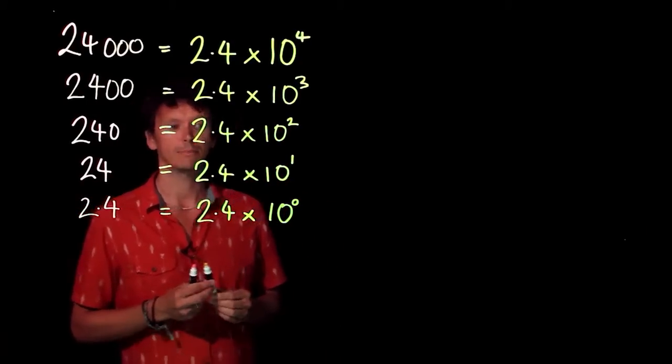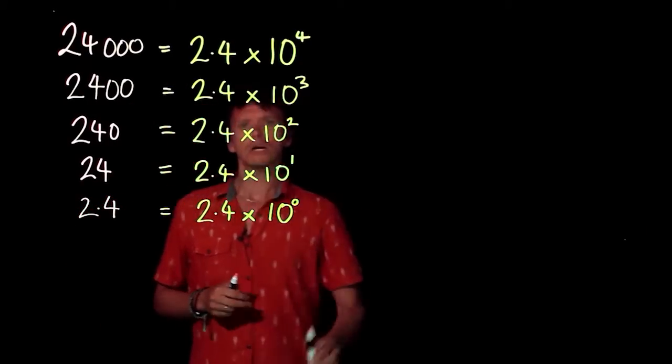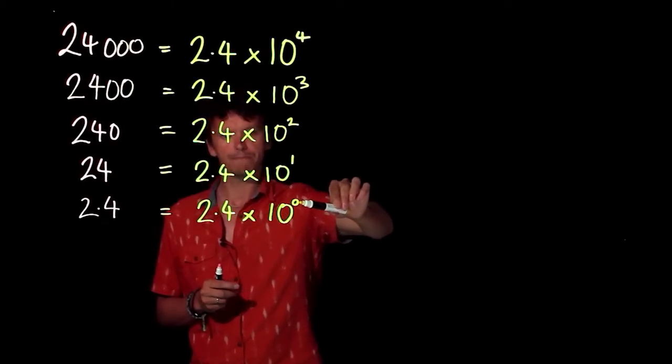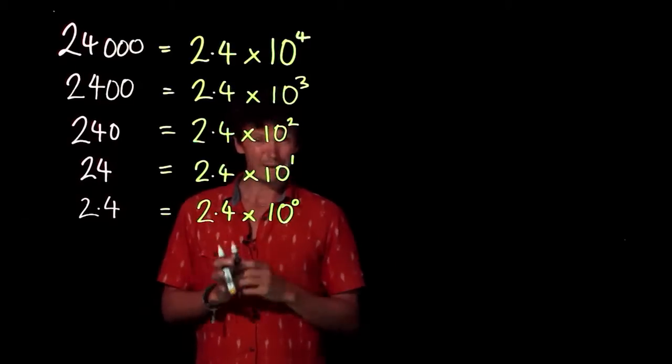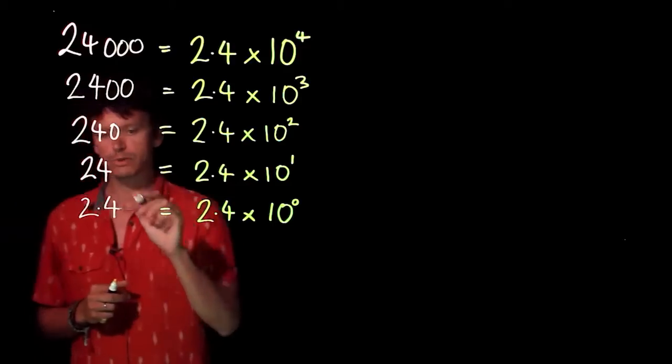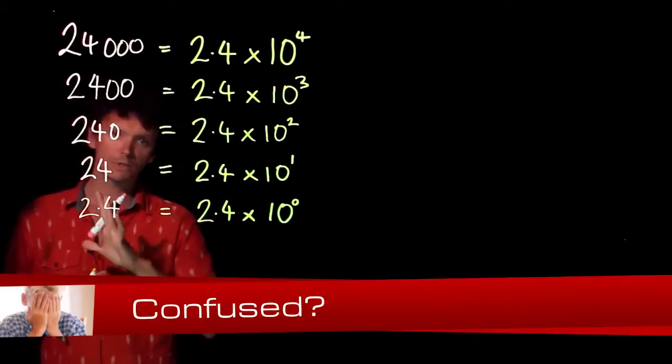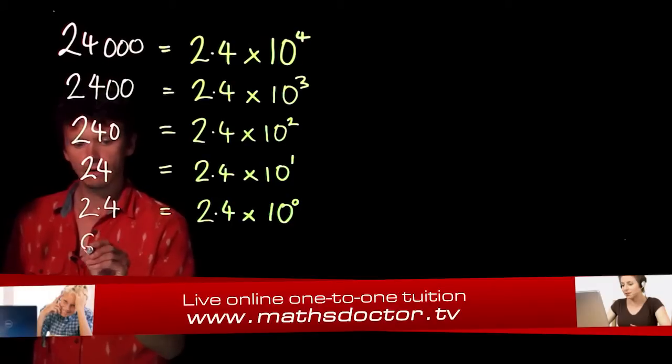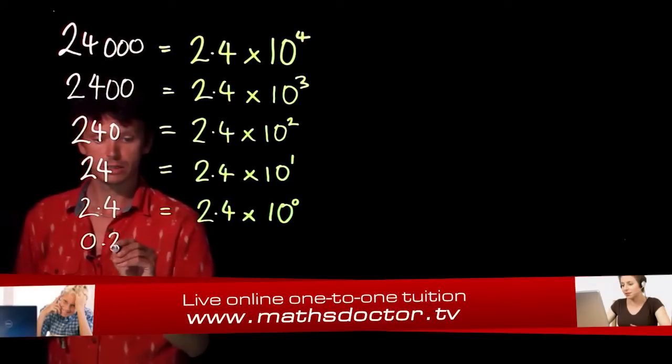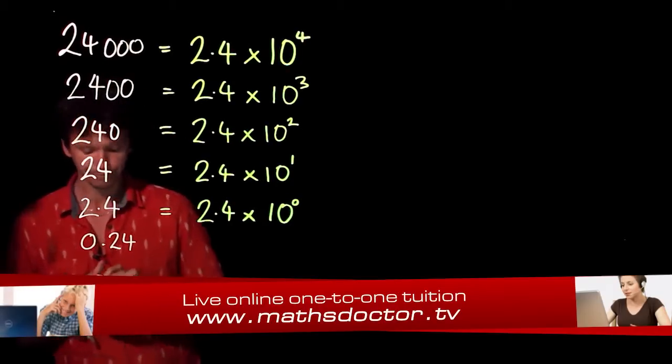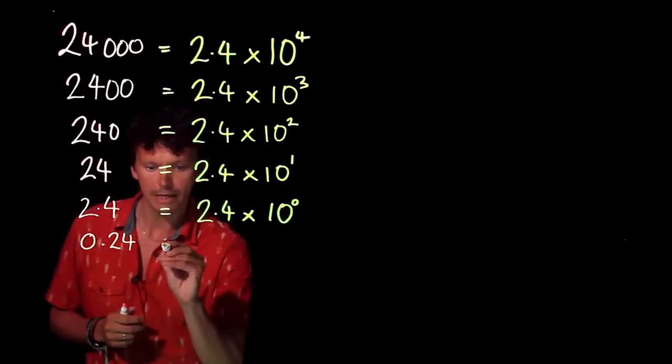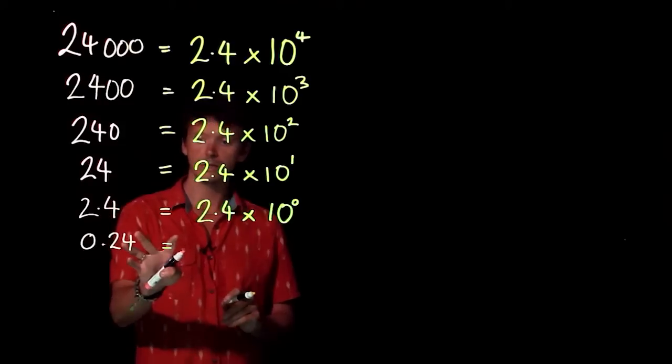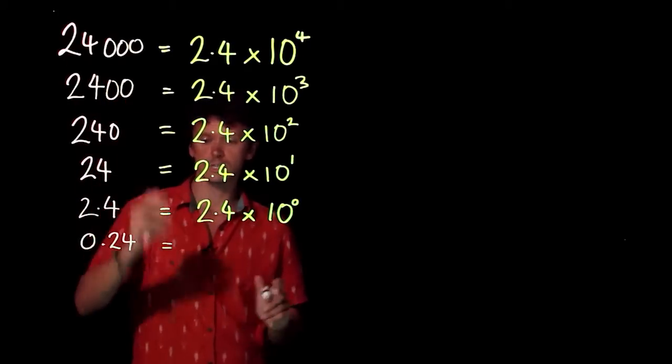If you notice what's happening here, our power of 10 is just reducing by 1 each time. We're going to use that pattern to consider what happens when we start going into numbers less than 1. So if we now have 0.24, we've dropped again by a power of 10. You'll see our digits there have shifted one place to the right.